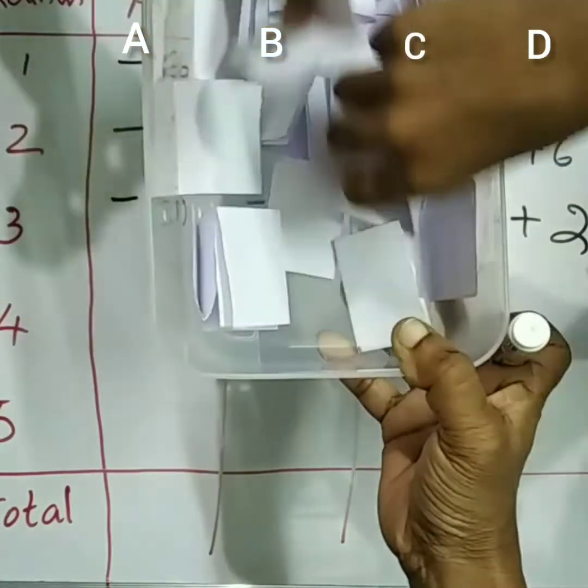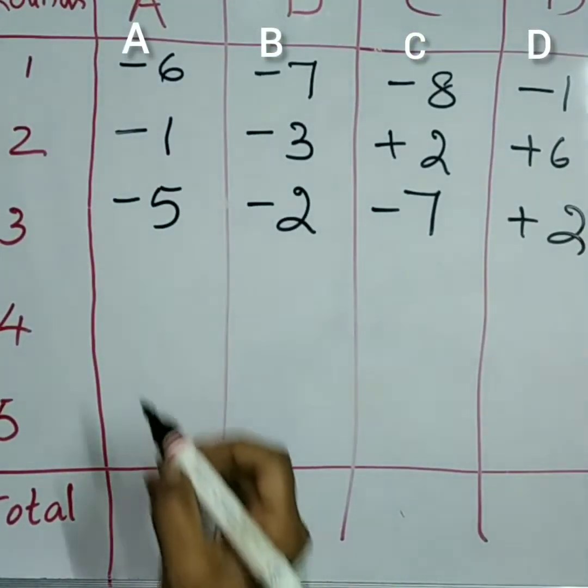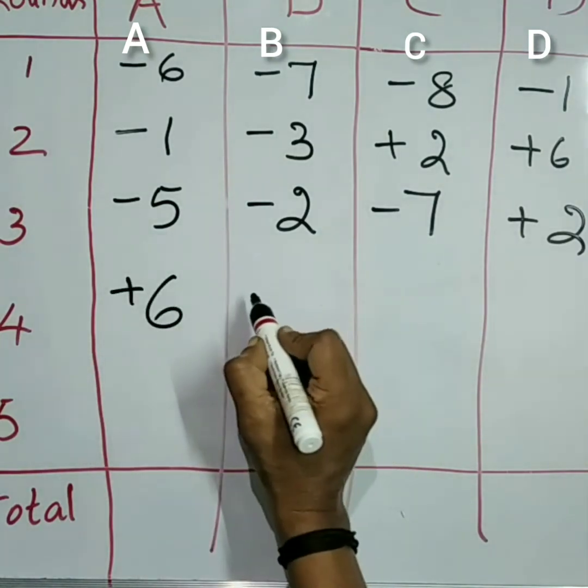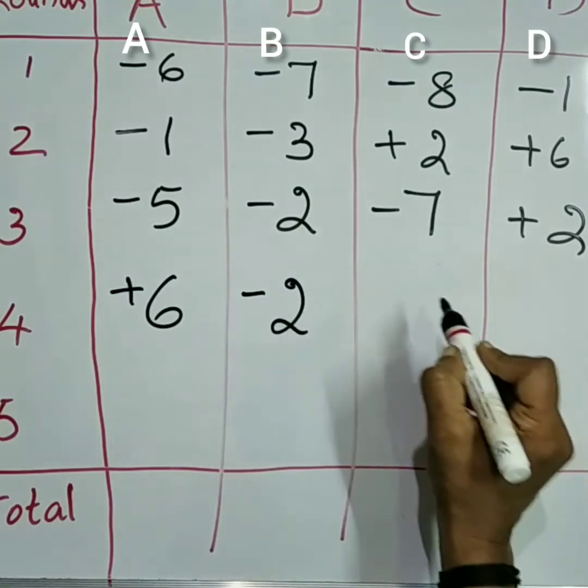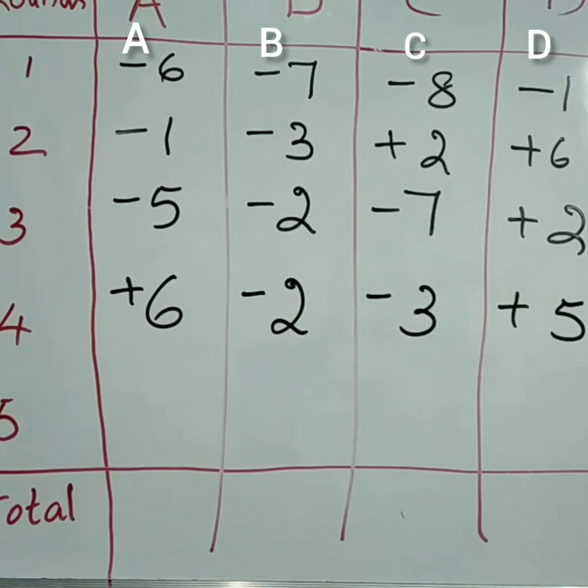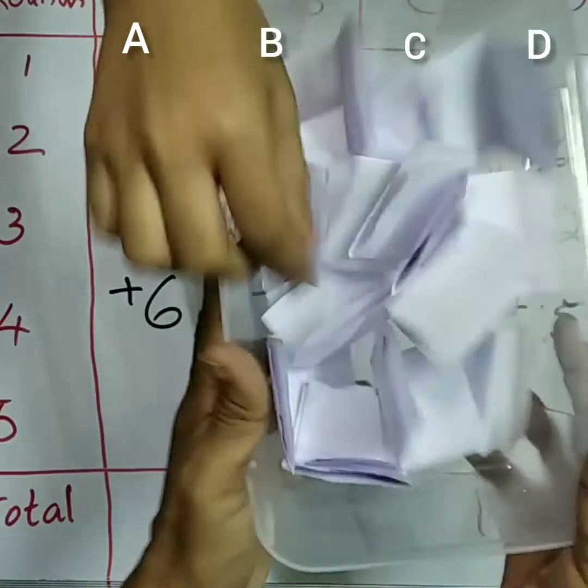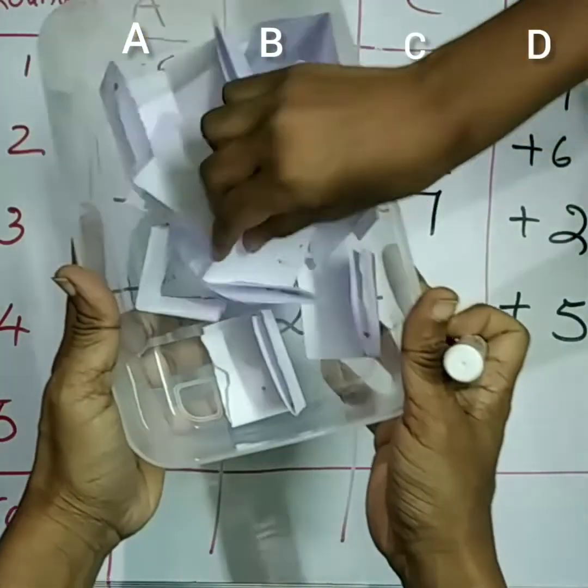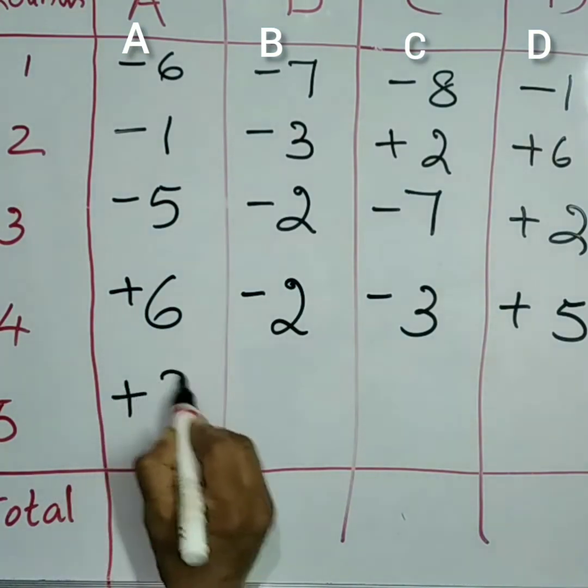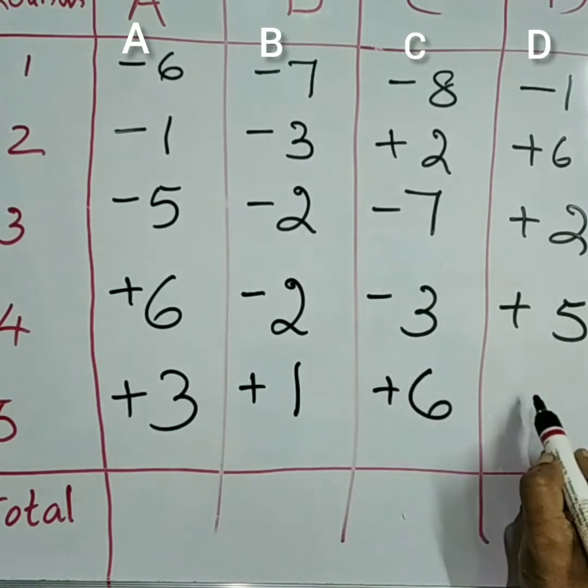Yes, fast. A plus 6, B minus 2, C minus 3, D plus 5. Again, fold it and keep. Yes. A plus 3, B plus 1, C plus 6, D plus 4.